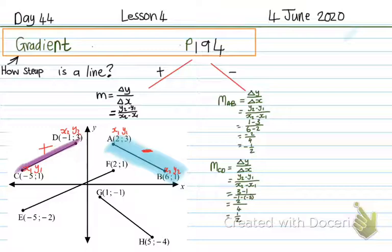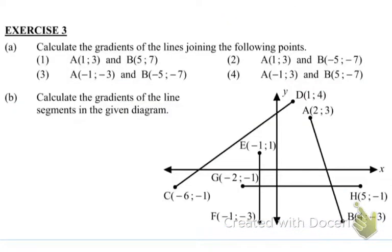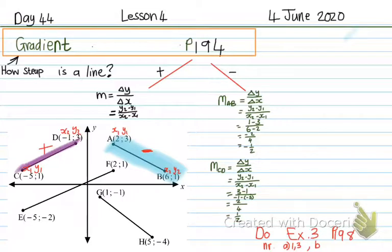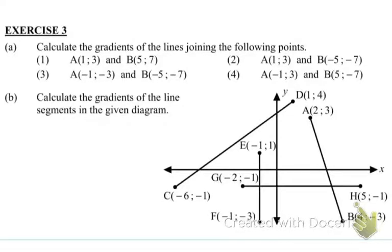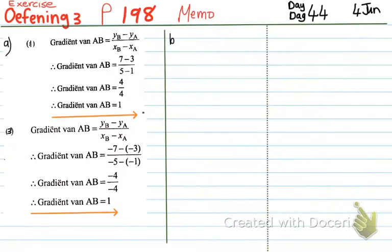So now what you have to do is the first part of exercise 3. We're going to divide exercise 3 into 2 days. Today you are only going to practice doing the gradient with the formula. It's going to be exercise 3, page 198, number A 1 and 3, and B. You can pause the video, do the exercise now, and when you are done you can play the video again and we'll mark the exercise together. Welcome back — it's exercise 3 on page 198.